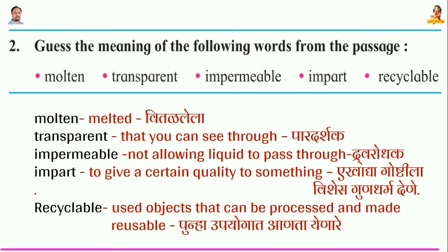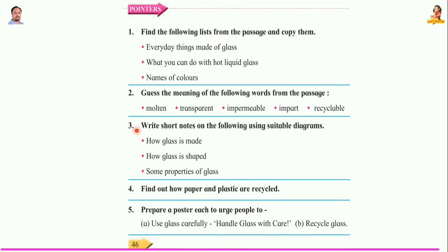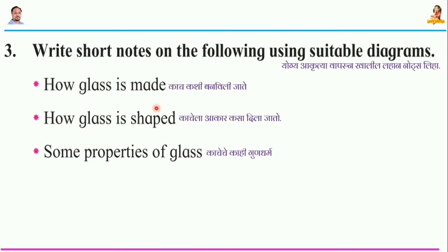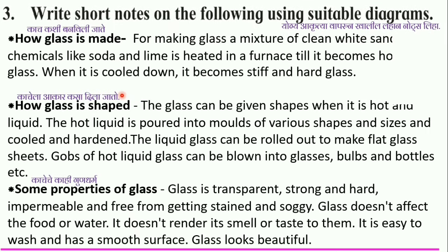Now question number three: write short notes on the following using suitable diagrams. Number one — how glass is made. For making glass, a mixture of clean white sand and chemicals like soda and lime is heated in a furnace till it becomes hot liquid glass.